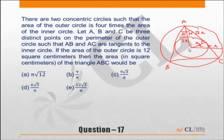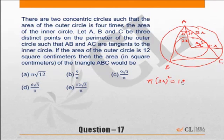So we have an equilateral triangle whose inner radius is r. Given that the area of the outer circle is 12 square centimeters, we have π(2r)² = 12, which gives 4πr² = 12, so πr² = 3, meaning r² = 3/π.